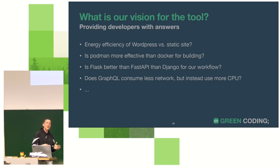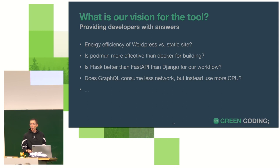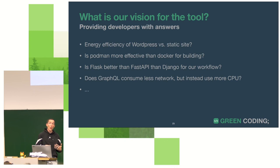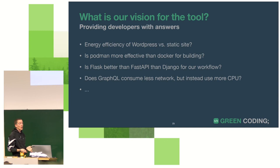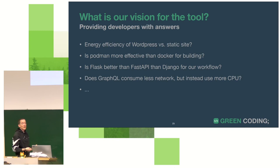Providing developers with answers: questions we hear at our Berlin meetups include — how much do I actually save with a static website compared to WordPress? Is GraphQL more energy-efficient than REST? Is Flask better than FastAPI? The data is currently not out there, and there aren't many tools that can measure energy in general. We believe our tool can answer these questions for developers.